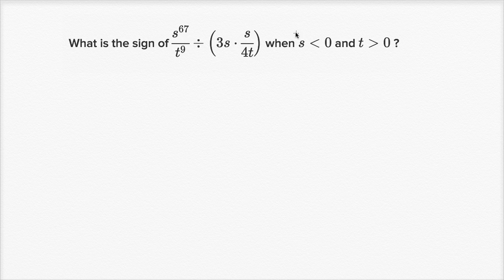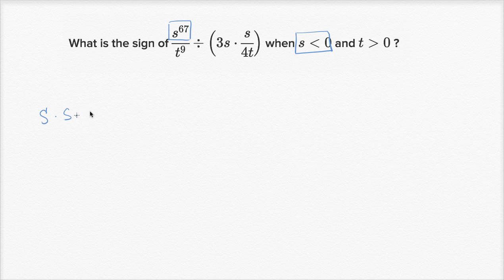The really interesting thing here is that s is less than zero — s is negative. We first have s to the 67th power. A negative number raised to an odd exponent: if you have an odd number of negative numbers being multiplied together, you're going to have a negative number. s to the 67th power is literally 67 s's multiplied together, so you have an odd number of negative numbers multiplied, which means the product is going to be negative.